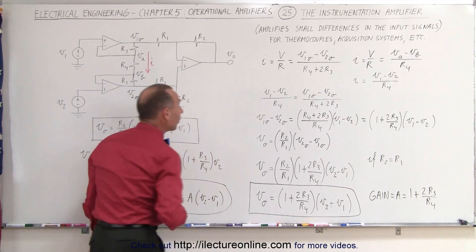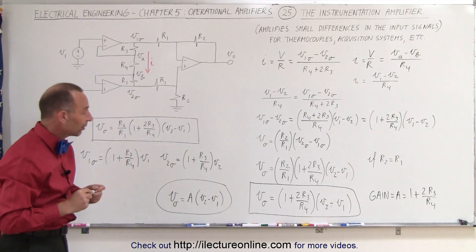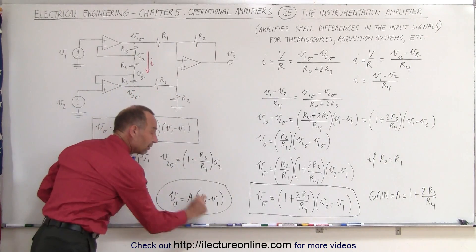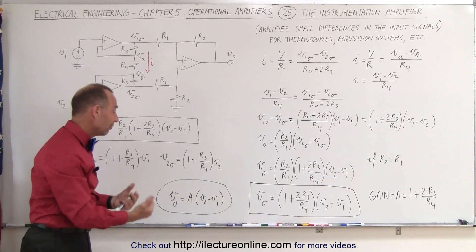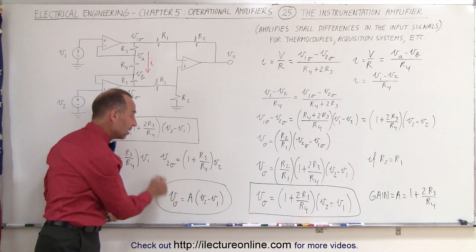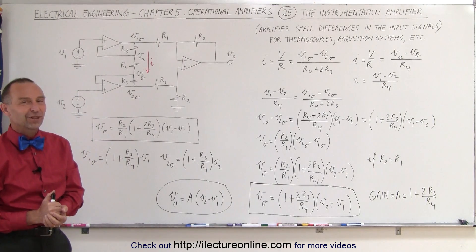And that's what we call the instrumentation amplifier circuit, which allows you to take a very small difference in the input voltages, amplify it quite a bit through a large gain to get an output voltage. And that's how it's done.